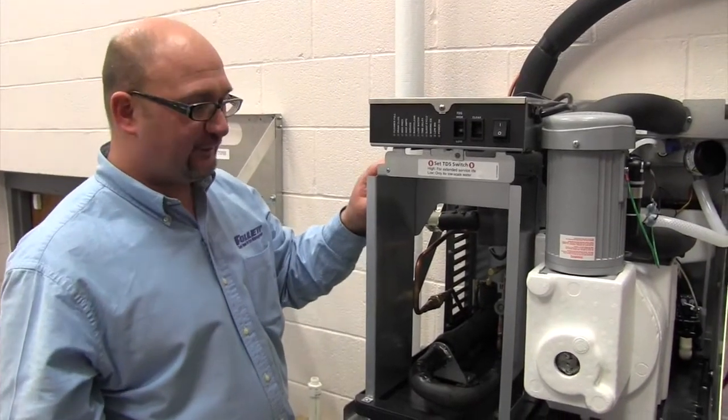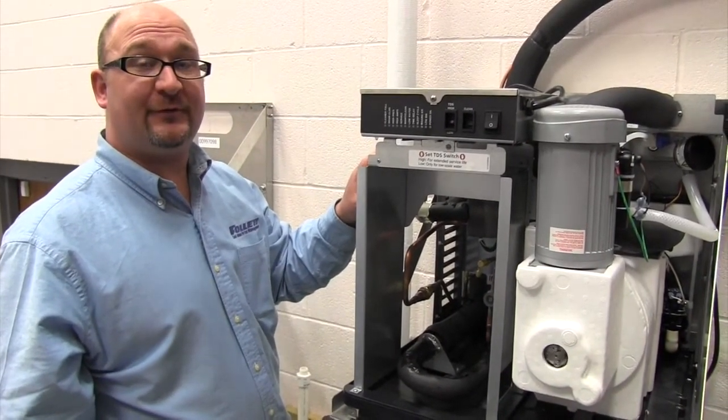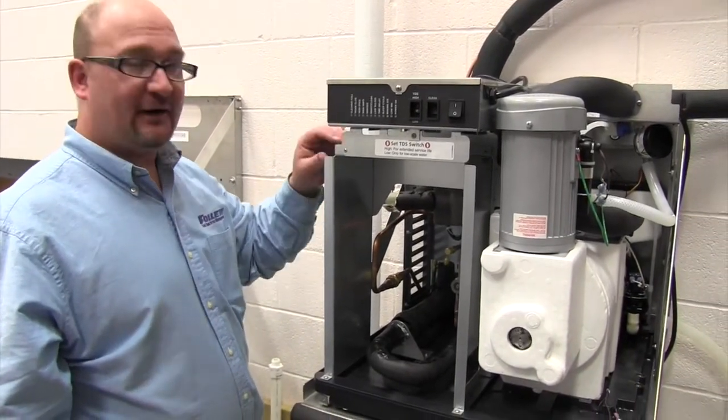Now we're going to turn the machine on. What we're going to do is let this go through its purge cycle. Make sure that we don't have any leaks either on our drain fitting in the back there or anywhere in the machine.